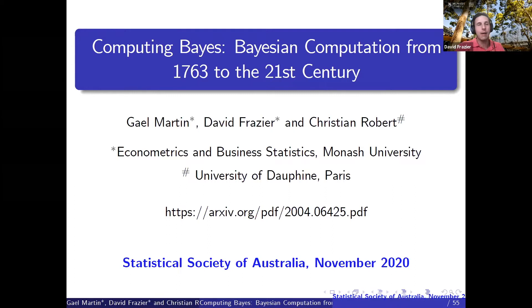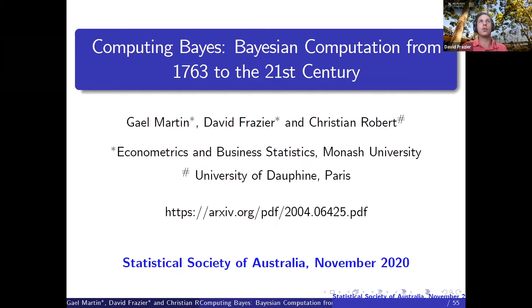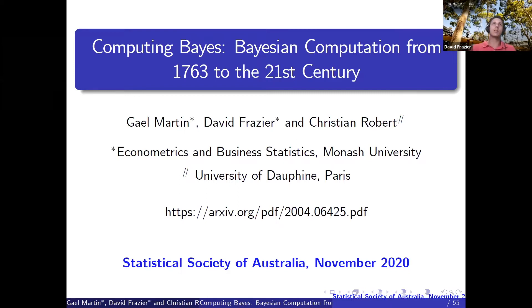Since 1999, she's averaged about one ARC grant every two years, including a very prestigious ARC Future Fellowship. Her research has been published in journals including the Journal of the Royal Statistical Society Series B, Biometrika, Journal of Computational and Graphical Statistics, and Journal of Econometrics. We're lucky to have Gail talk to us today about her recent work covering an overview of Bayesian statistics and its computational aspects.